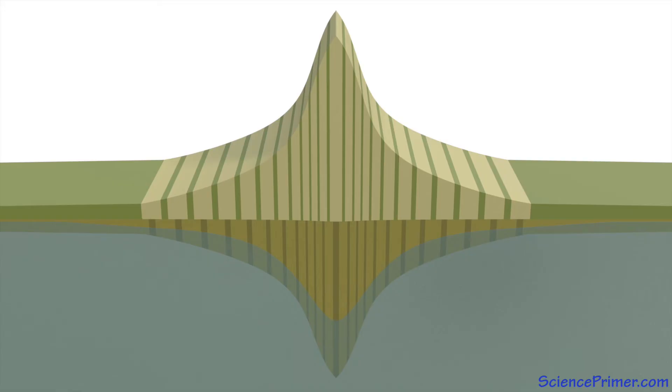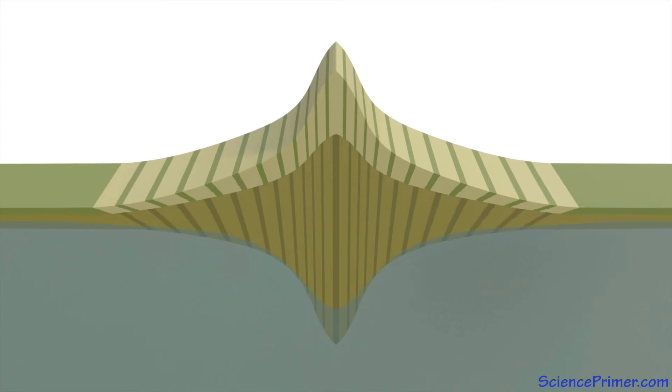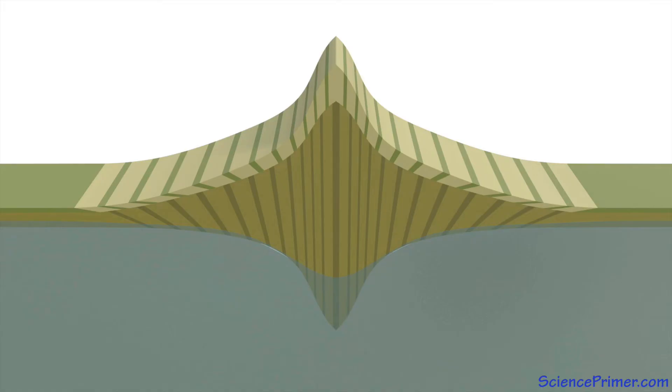Even after all tectonic activity has ceased, isostasy plays a role in maintaining the height of the mountain. As erosion removes material from the top, the crust becomes lighter. As a result, isostatic uplift occurs, causing the root to rise. Due to differences in the density between crust and mantle, there's about a 4-meter uplift for every 5 meters of height lost to erosion. This compensating uplift allows large mountain ranges to persist across geological time even in regions with no tectonic activity.